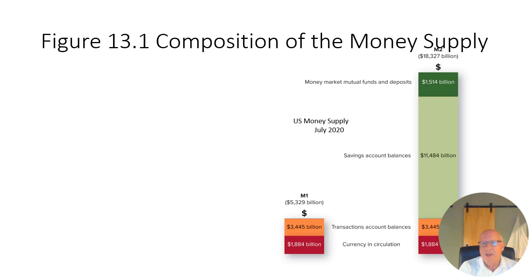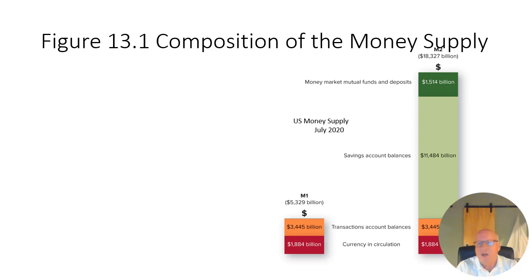The M2 definition of money — so close to M1 that many economists actually prefer it — adds savings accounts and money market mutual funds, and all of a sudden you skyrocket from about $5 trillion all the way up to $18 trillion. Savings accounts and money market funds together are dramatically larger than checking account and cash balances. So if you want to look at the total purchasing power in our economy — how much total money do we have to spend — we have roughly $18.327 trillion of immediate purchasing power, or something so close to immediate purchasing power that we treat it as such. That's the total demand and ability to purchase in our system.